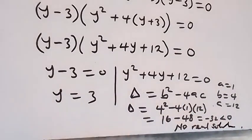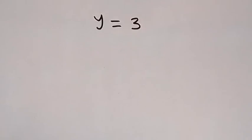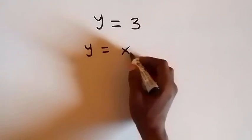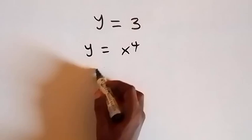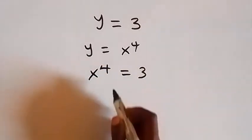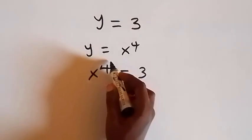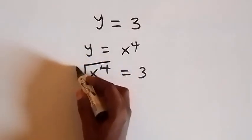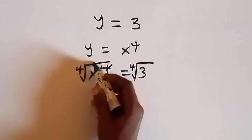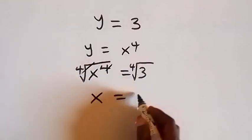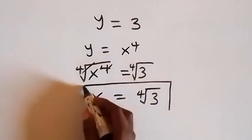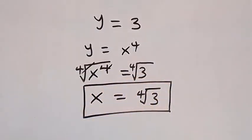Then from y equals to 3, recall that we let y be equals to x raised to power 4. So now it means that x raised to power 4 equals to 3. Then to get x, we take the fourth root on both sides — the power of 4 cancels the 4th root. So we get x, which is equals to 4th root of 3.